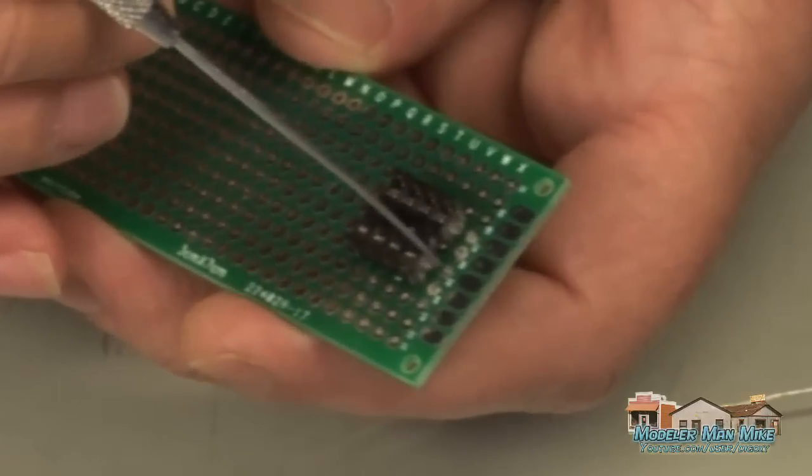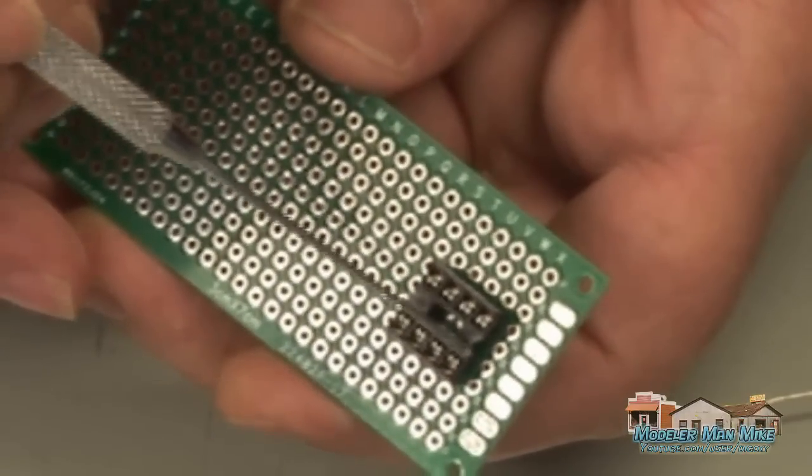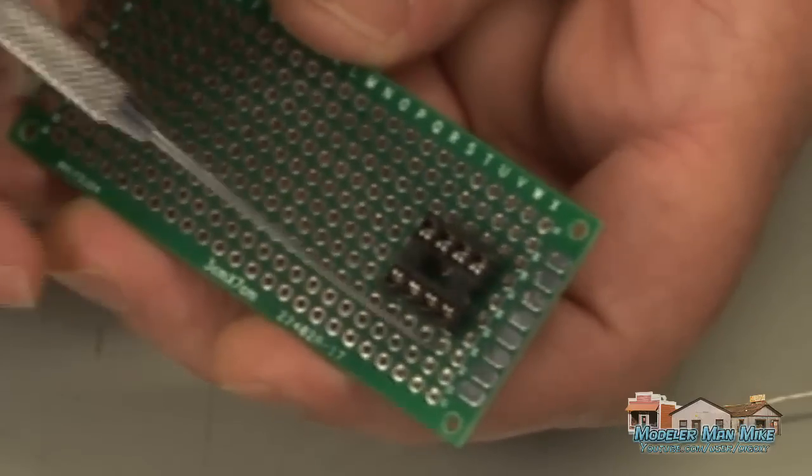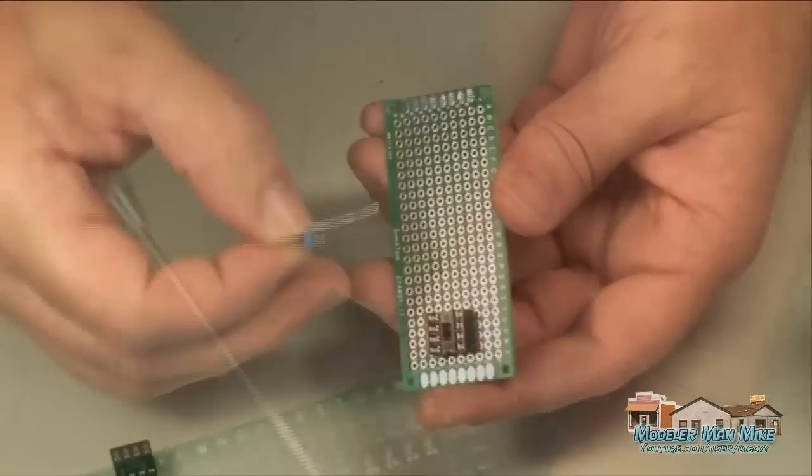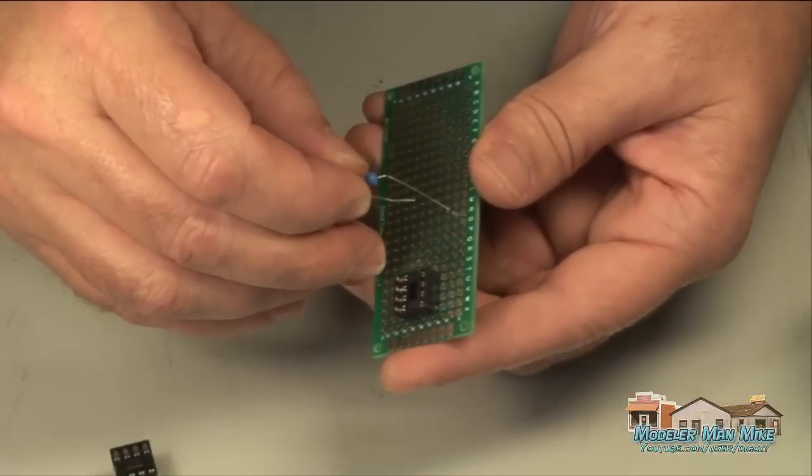Whenever I put these sockets in, I always make sure that I put pin 1, which is a notched area here on the outside, so that I don't put my chips in backwards. I've done that. I haven't actually fried one, but I have put them in backwards.